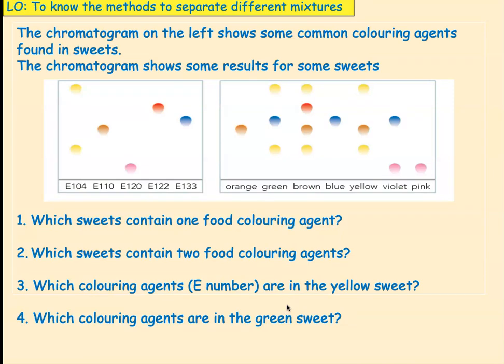Right, let's have a look at this one here. Here we have some artificial colorings, e-numbers, and we have sweets that, like Smarties, with the colors of the sweets. So, I want you to tell me which sweets will have only one food coloring agent. So, therefore, they will only have one of the patterns for the e-numbers. That's right, it's orange, because orange has only got E-110, blue, because it's only got E-133, and pink, because it's only got E-120.